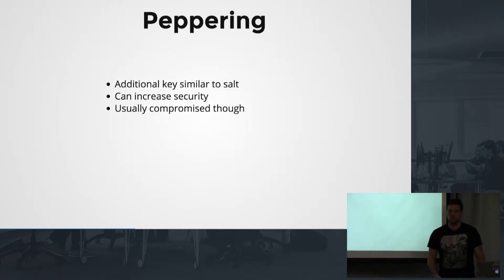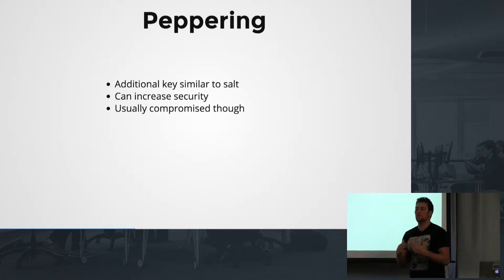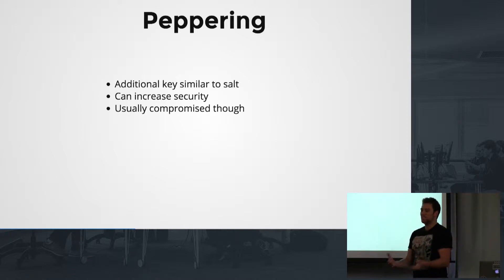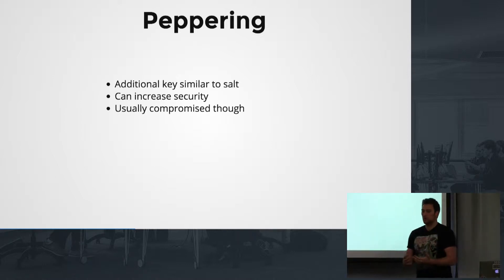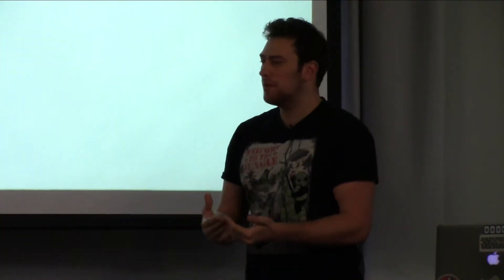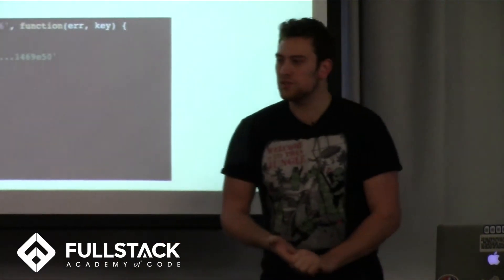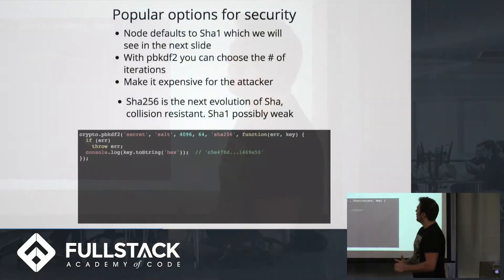Peppering is another concept — it's a separate key that you also store and add as an identifier. But if you've already been compromised, the pepper has probably been compromised as well, so it's usually not that effective. I didn't write much about this because there wasn't strong consensus on whether it matters.